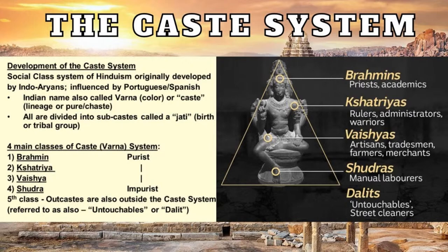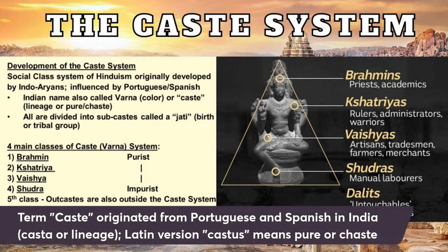The term 'caste' is thought to have originated from the Portuguese word 'casta,' which means lineage — because of who you're related back to. There's also a Latin version, 'castus,' which can mean pure or chaste. So it's believed that those on the highest caste are considered more pure than those on the bottom.